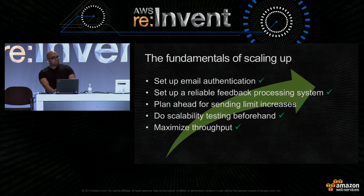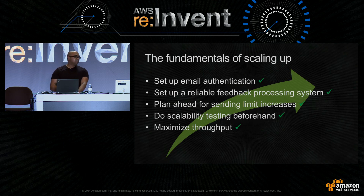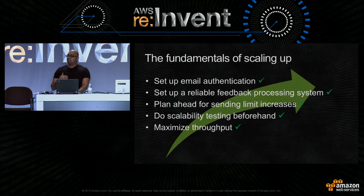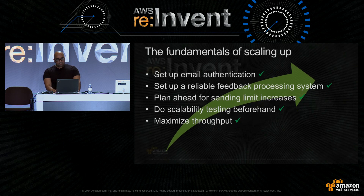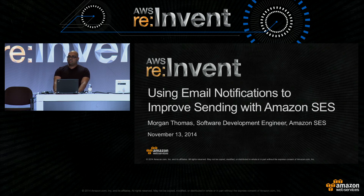So what did we talk about? We first talked about setting up DKIM authentication for your emails. We talked about the importance of a reliable feedback processing system, which we'll cover in a little bit. We talked about how to monitor your sending, how to check your sending limits, and how to increase those limits. We also talked about how you can do scalability testing with the mailbox simulator, and some things you can do to tweak your application in order to maximize the throughput of your email sending. I'd now like to invite up Morgan Thomas from the SES team to do a deep dive into how you can build a robust notification processor.